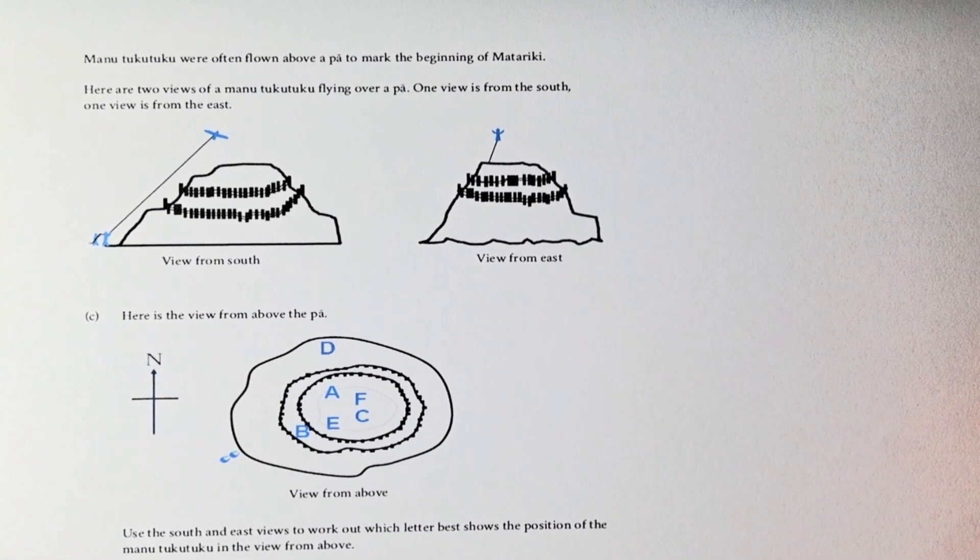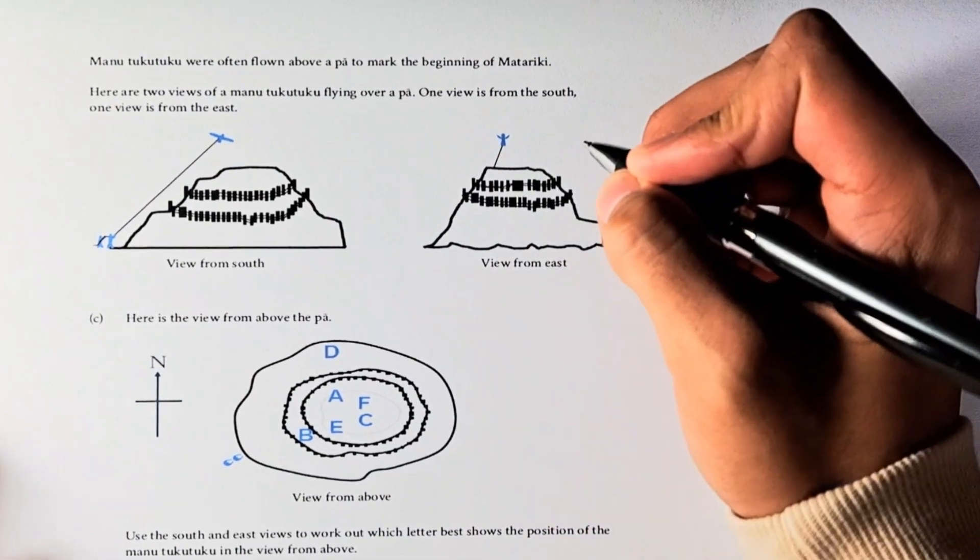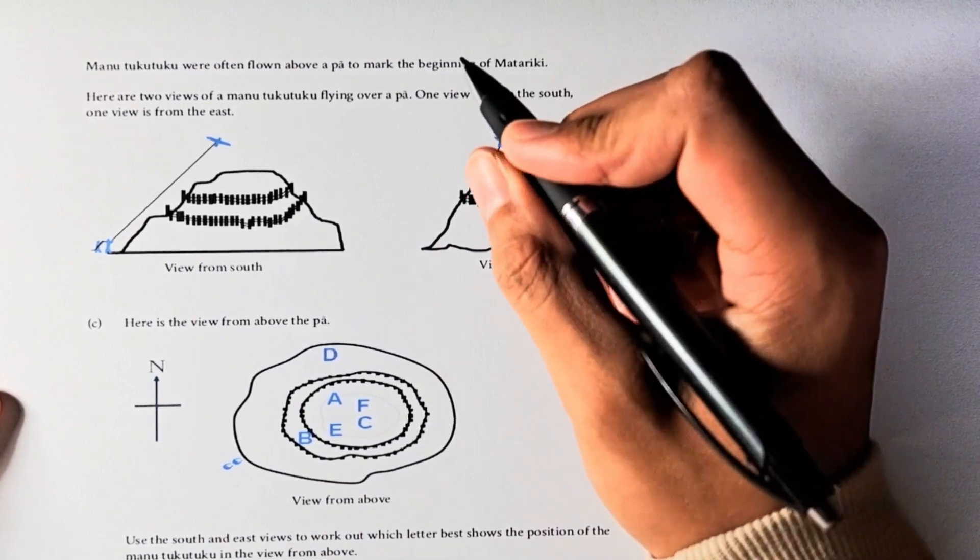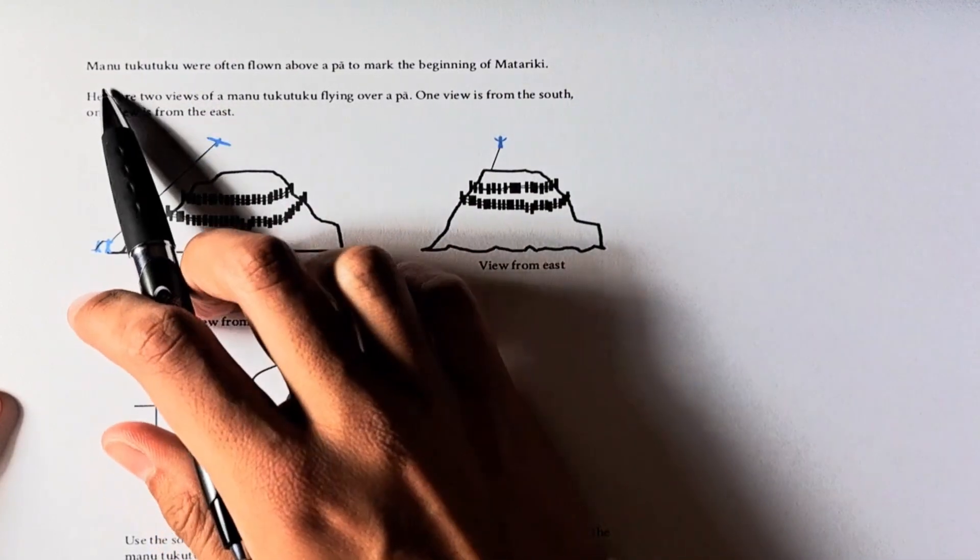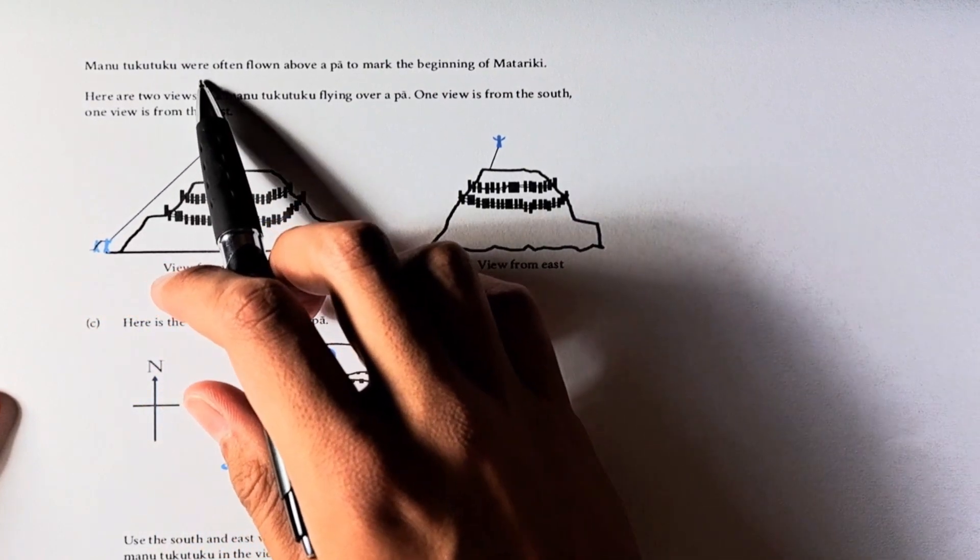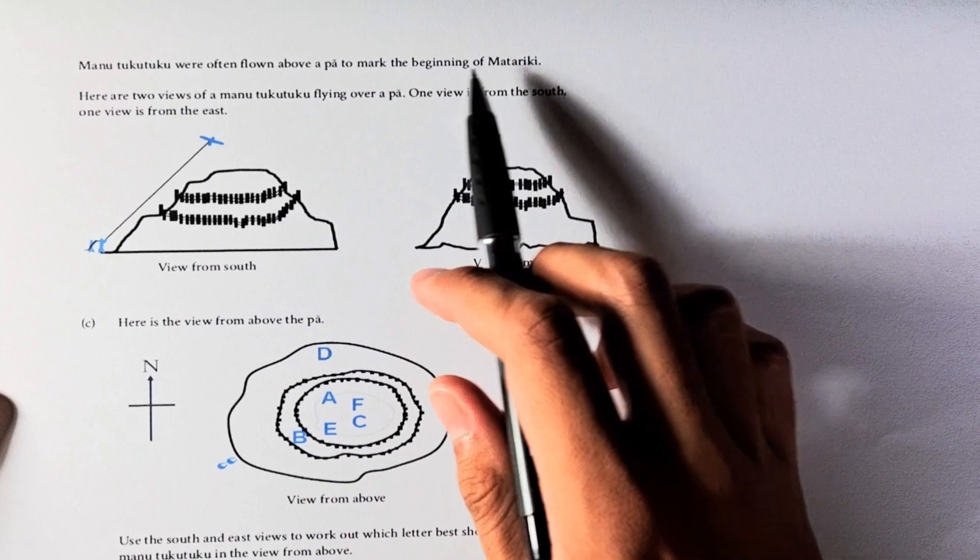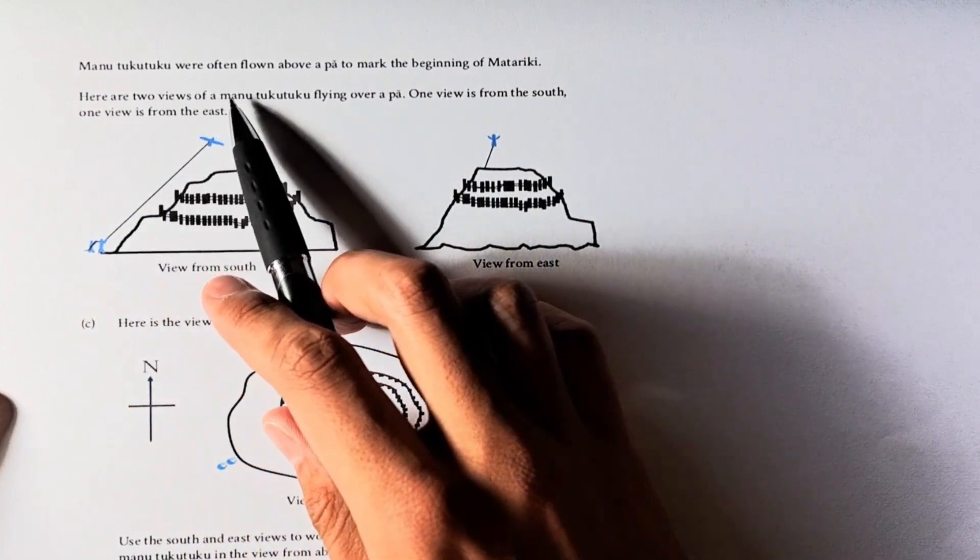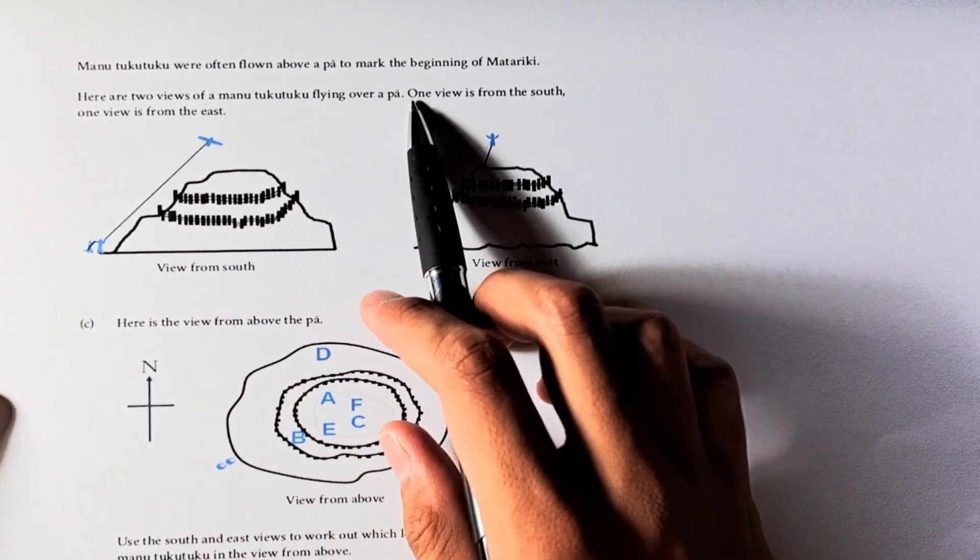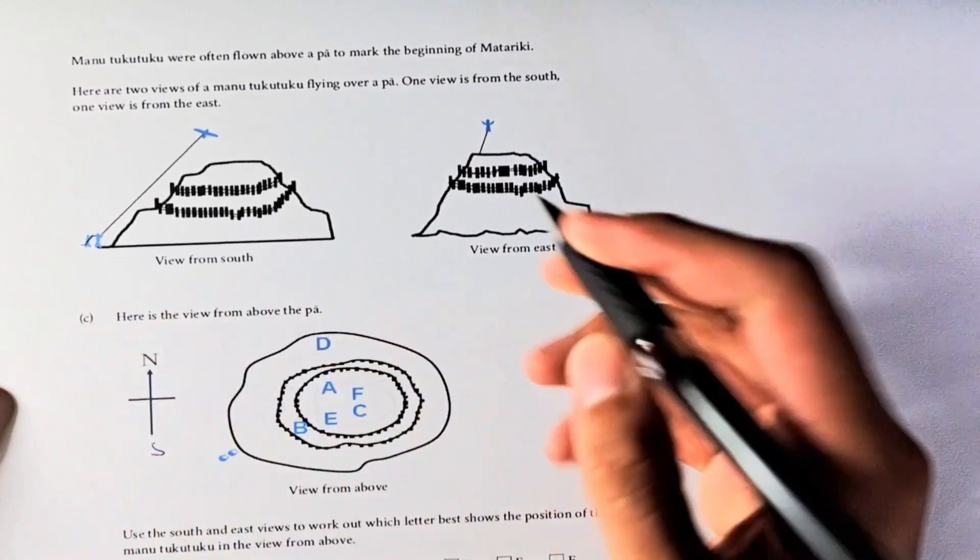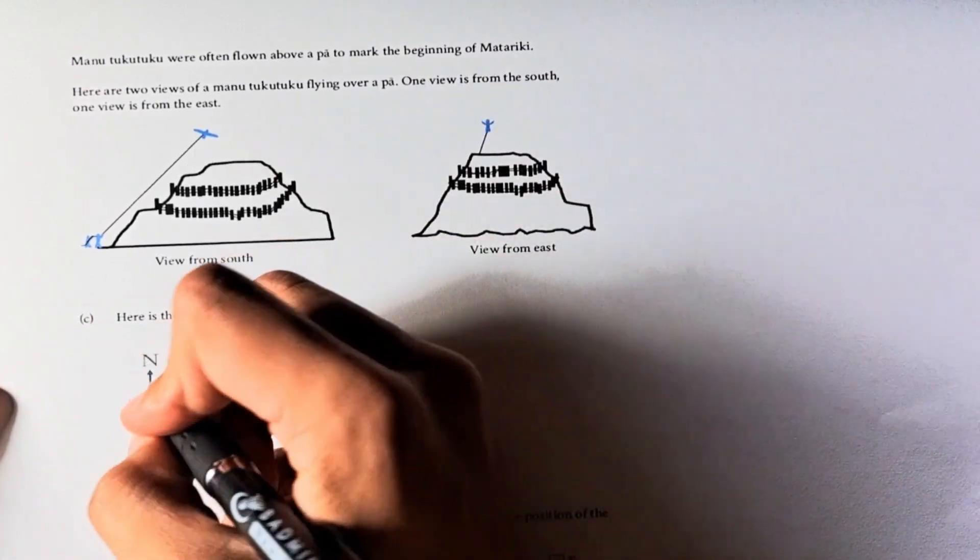This is question 3C, and I am Junius Mr. Ong San, the more younger and handsome version. All right, so now we are trying to figure out this question. Manu Tuku Tuku were often flown above a pa to mark the beginning of Matariki. Here are two views of Manu Tuku Tuku flying over a pa.